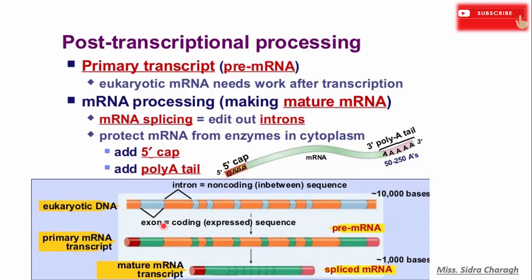Introns are the non-coding regions while exons are the coding regions. A 5' cap and a 3' poly-A tail are also added so that the messenger RNA molecule remains stable. This cap and tail protect the messenger RNA from a variety of nucleases and phosphatases.